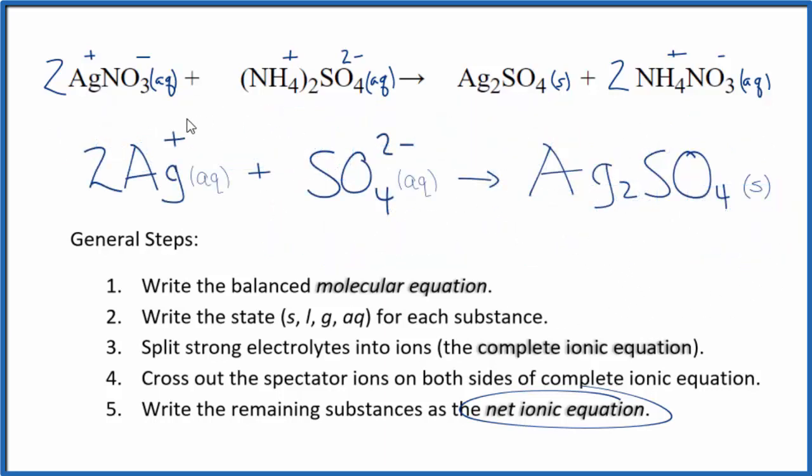So this is the balanced net ionic equation for silver nitrate plus ammonium sulfate. You'll note charge is balanced. We have two times one plus, that's two plus, two minus. That gives us a net charge of zero.